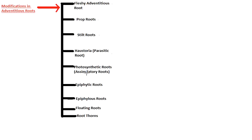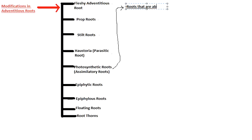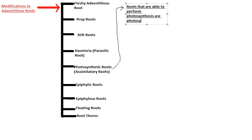First of all, the photosynthetic roots, or the assimilatory roots. Photosynthetic roots are roots that are able to perform photosynthesis. Quite intuitive — roots that are able to perform photosynthesis are photosynthetic roots.